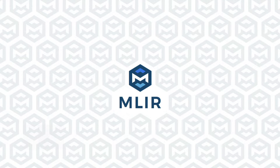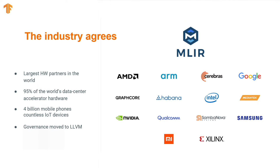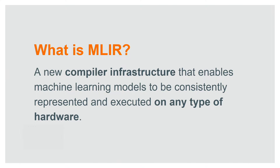MLIR is a new system that we at Google have been building, but we are bringing it to the industry to help solve common problems that manifest in different ways. One of the things we're really excited about is that MLIR is not just a Google technology — we are collaborating extensively with hardware makers across the industry, and we're seeing a lot of excitement and adoption by people building the world's biggest and most popular hardware. But what is MLIR? MLIR is a compiler infrastructure.